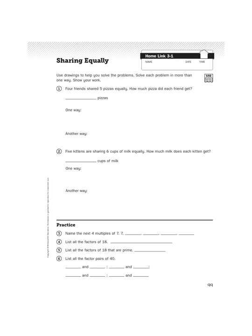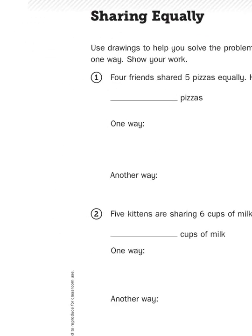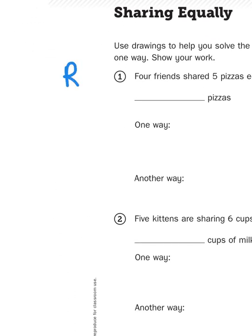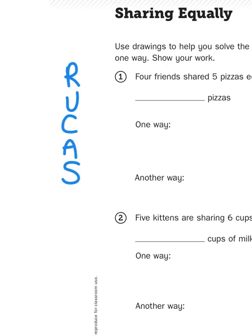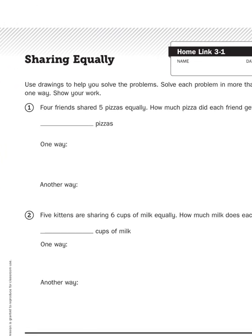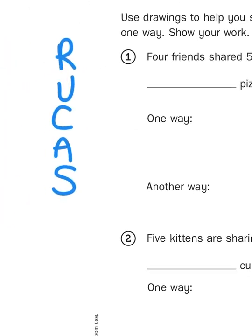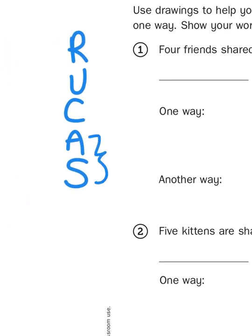So let's take a look at that problem again. We're going to use the filter of RUCKUS to help us think about this problem. We're going to re-read this problem, underline the question, circle the important information, come up with an action plan, and then solve. And it says to solve each problem in more than one way.